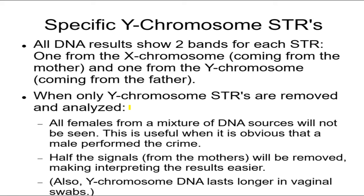By taking only the Y chromosome DNA, all the women's DNA will not be seen, giving you a very clean DNA sample for matching. Also, when we only analyze Y-chromosome STRs, the mother does not contribute the Y, so we only have one peak at each locus - it's a lot cleaner and easier to interpret than two peaks, especially if there's some interference. Also, Y chromosome DNA lasts longer in vaginal swabs for relevant crimes.